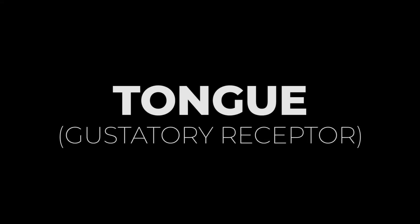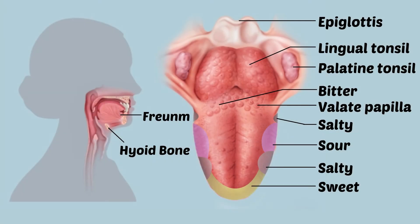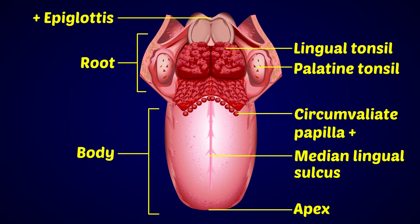In man, the taste buds are found only in the mouth and are abundant in the tongue. They are distributed over the dorsal and under surface of the tongue, on the laryngeal surface of the epiglottis, pharynx, and on the cheek.